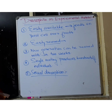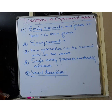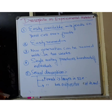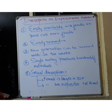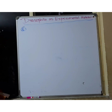Drosophila is a unisexual fly — male and female individuals are separate. Distinguishing male from female is called sexual dimorphism and is easy using two criteria: size and ovipositor. Males are smaller in size than females. Females have an ovipositor at their rear end that helps in laying eggs, which males do not have. So on these two bases you can distinguish male and female: female is larger in size and has an ovipositor; male is smaller in size.